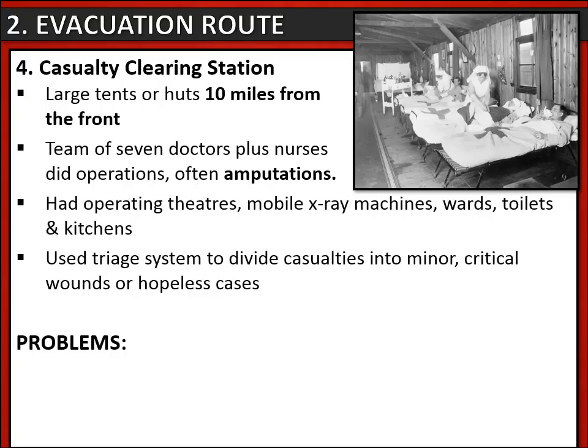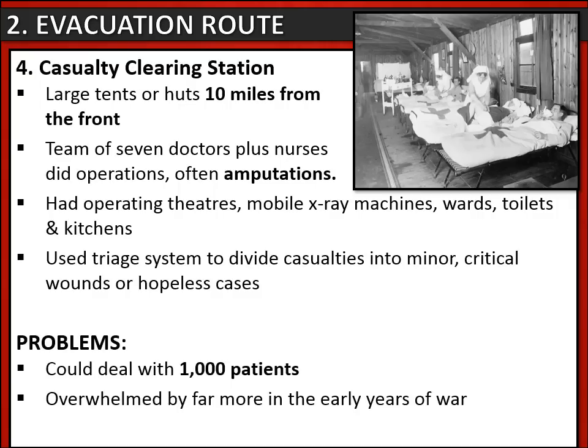The casualty clearing station, like every part of the evacuation route, had its problems. It could deal with about a thousand patients at a time, but that meant it would easily become overwhelmed, especially during the start of the war.